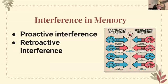Interference in memory. We're going to look at proactive interference and retroactive interference. Memory interference occurs in two main forms. Proactive interference happens when old memories hinder the ability to remember new information — for example, an old phone number can make it difficult to remember a new one. Retroactive interference is the opposite, where new information affects the recall of older memories, such as learning a new address and then struggling to recall a previous one. These types of interference demonstrate how new and old memories can compete within our memory system and impact our ability to recall information accurately.